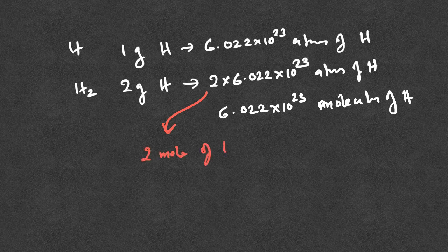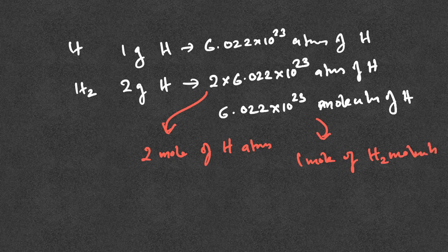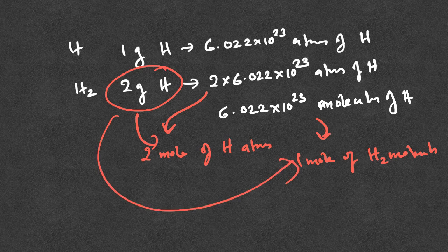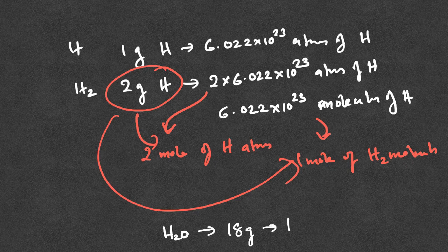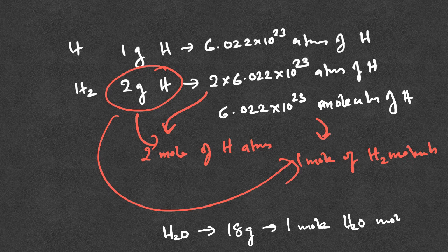2 grams of hydrogen represents 2 moles of hydrogen atoms and 1 mole of hydrogen molecules. So we have to be careful to specify moles of atoms or molecules in a given region. That's why H₂O at 18 grams means 1 mole of H₂O molecules. This is the basic mole concept.